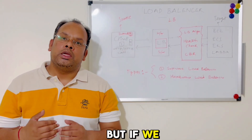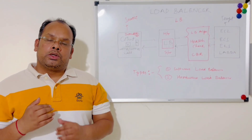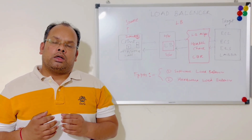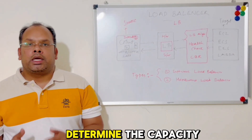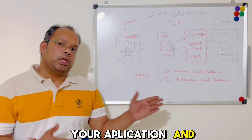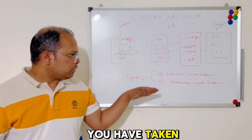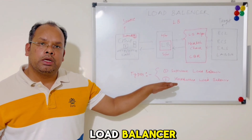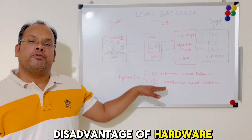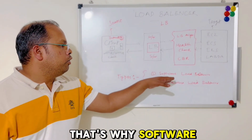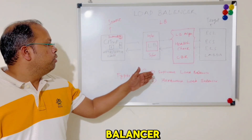In contrast, if you choose a hardware load balancer, you have to plan for capacity upfront. Let's say you initially provision capacity X, but later traffic grows to 2X — that is a disadvantage of hardware load balancers. That's why software load balancers are more popular than hardware ones, and software load balancer is the preferred choice.